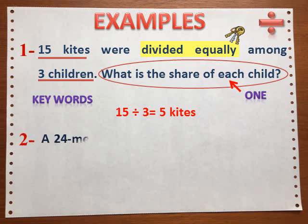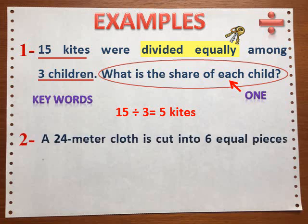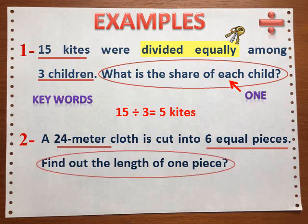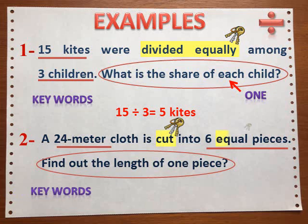A 24-meter cloth is cut into six equal pieces — find out the length of one piece. We have the keywords 'cut' and 'equal', and are being asked about 'each', so we are going to use the division operation.